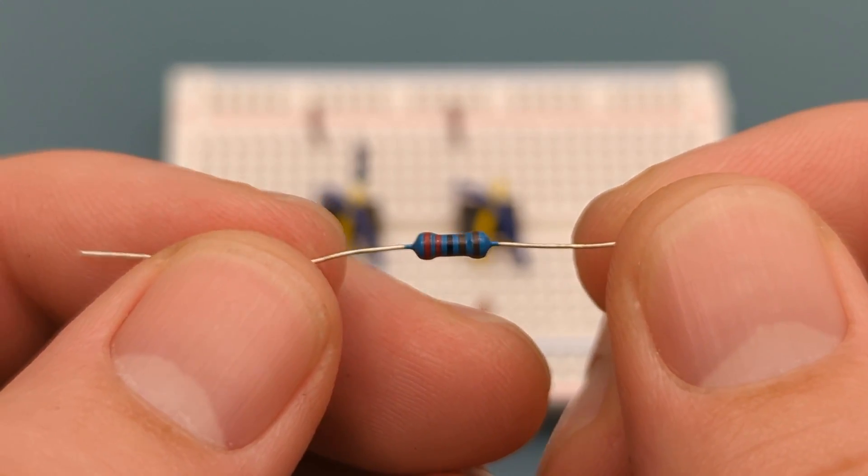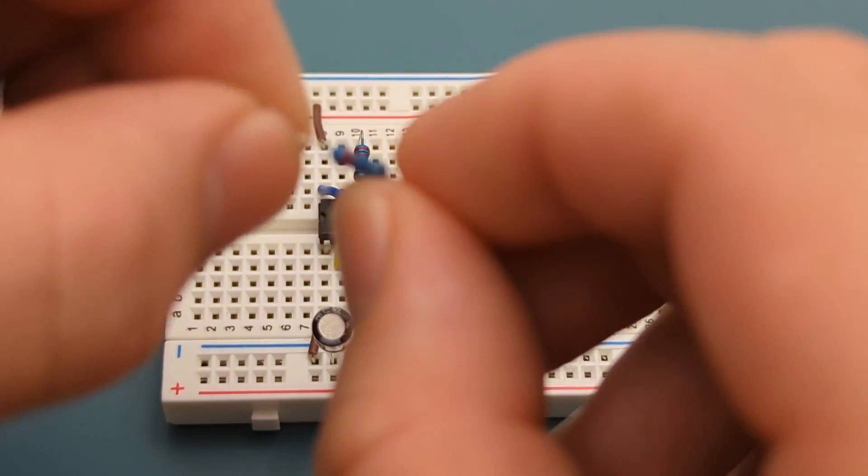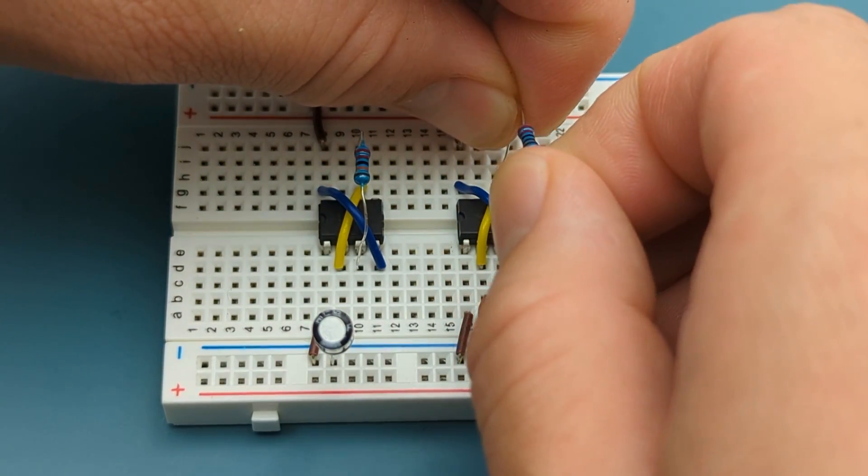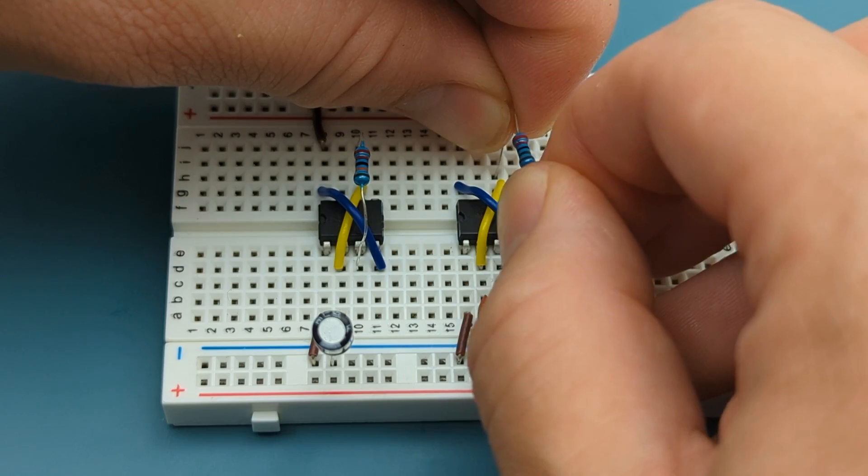Bend the ends of a 2.2 kilo ohm resistor. Insert the 2.2 kilo ohm resistor into pin 3 or output and pin 6 or threshold of the second 555 timer.